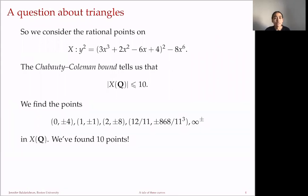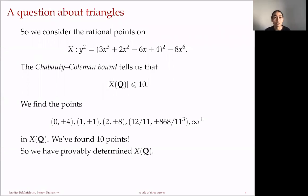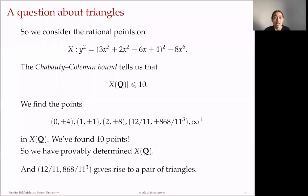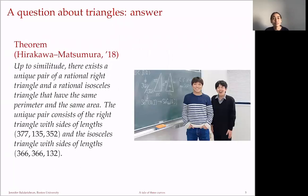When we search, there are a number of rational points—in fact, exactly 10 rational points. We've determined the set of rational points on this curve. Tracing through the coordinates, the point with x-coordinate 12/11 and positive y-coordinate gives rise to a pair of triangles. The theorem of Hirakawa and Matsumura states that up to similitude, there exists a unique pair of a rational right triangle and a rational isosceles triangle with the same perimeter and the same area.